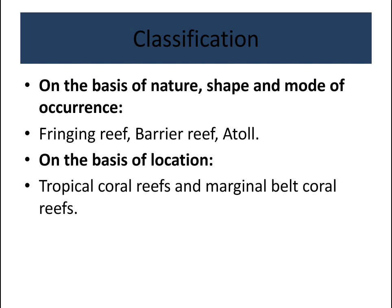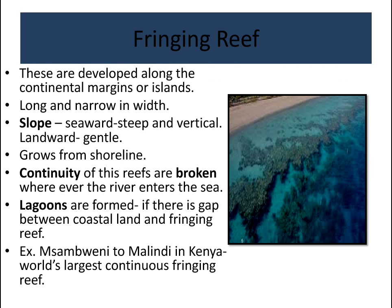Coral reefs are classified on two bases. On the basis of nature, shape, and mode of occurrence, they are classified into fringing reef, barrier reef, and atoll. On the basis of location, they are classified into tropical coral reefs and marginal belt coral reefs. Fringing reefs are long but have less width. Their continuity is broken where rivers enter, bringing fresh and turbid water.